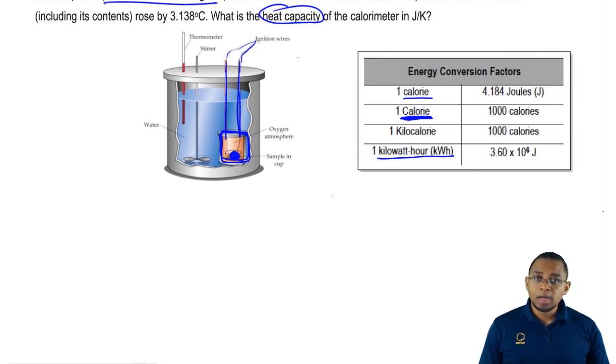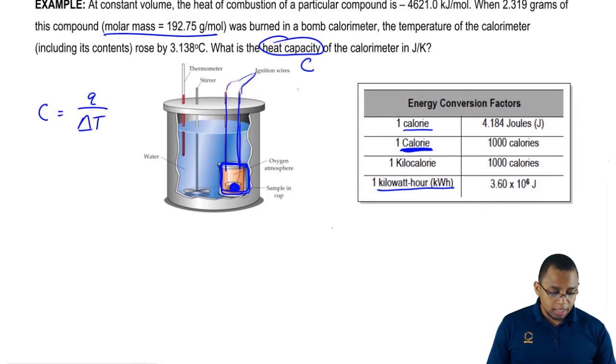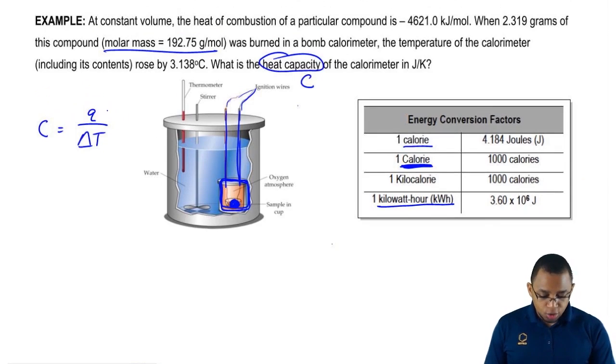Let's take a look at this question. We want to calculate heat capacity. Remember, this is capital C. Heat capacity equals Q over the change in temperature. What we need to realize here is we need to isolate joules. We need to find joules for Q, and we need the temperature to be in Kelvin. We already have half of it right off the bat, the easy part. The easy part here is I told you that the temperature rose by this much.